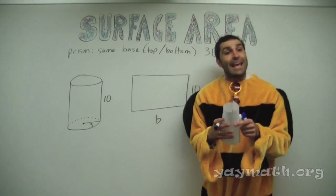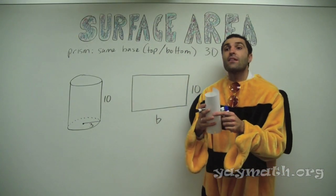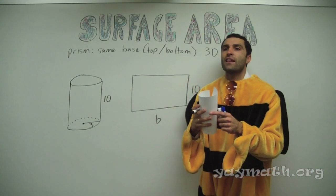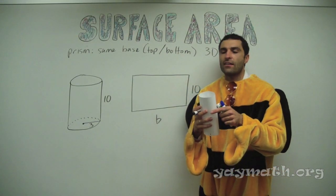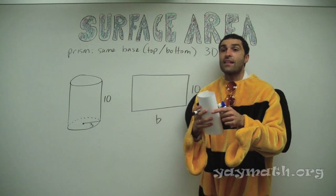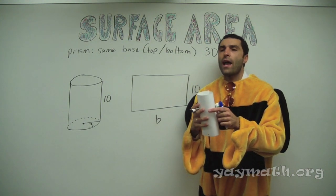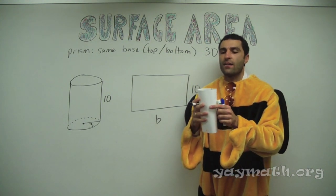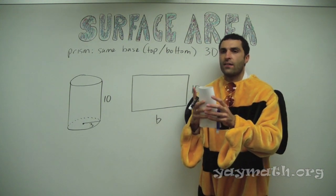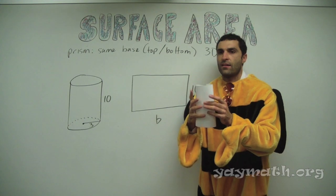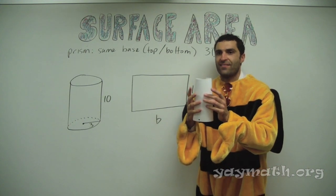It can't just be three. Two pi r. Two pi times three.